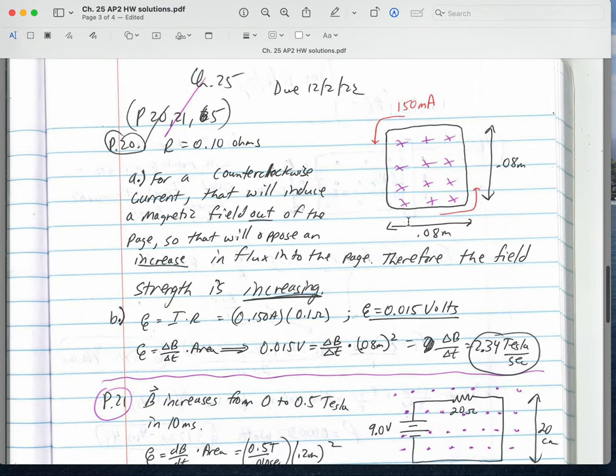For problem 20, you're given a current of one amp counterclockwise, you're given the dimensions of the loop, and you were asked, I believe, is the magnetic field strength increasing or decreasing and what's the rate of change of the field? Change in field strength versus change in time. To induce a counterclockwise current when we have a field going into the page means this counterclockwise current would generate a field with dots on the inside of that area. That means it will oppose an increase in the flux, so the flux would be increasing, field strength would be increasing.